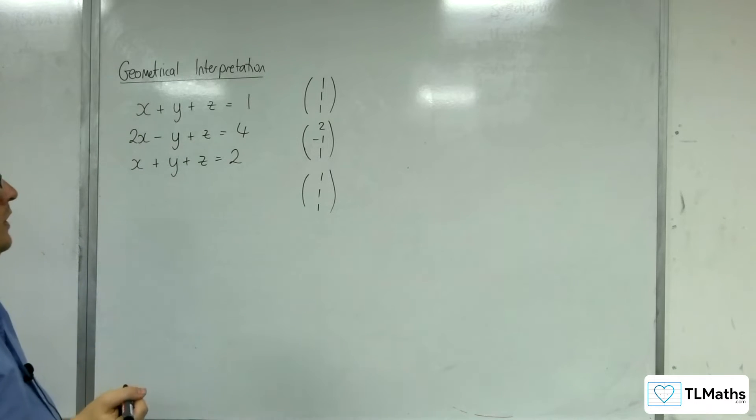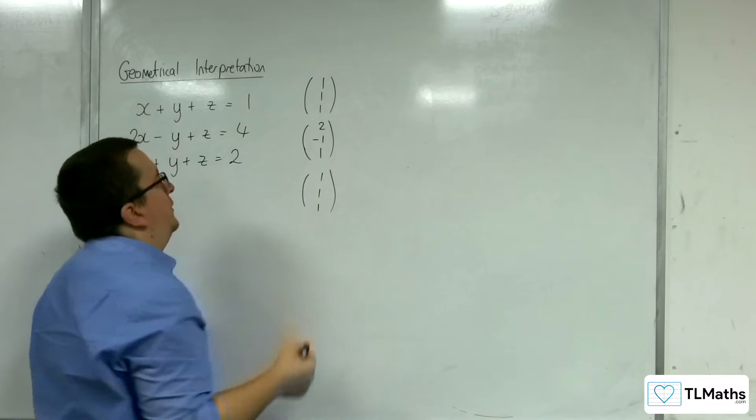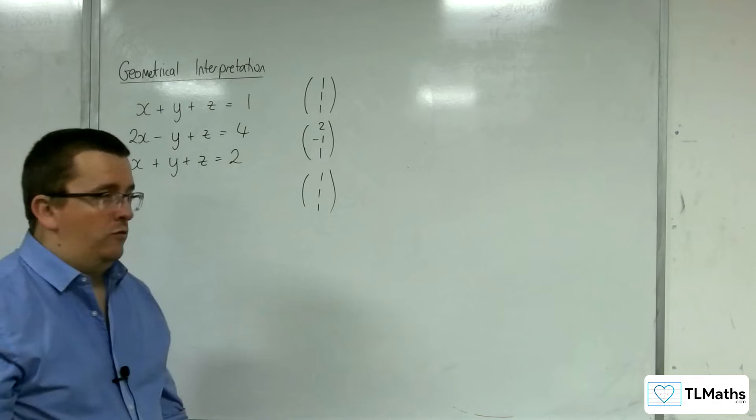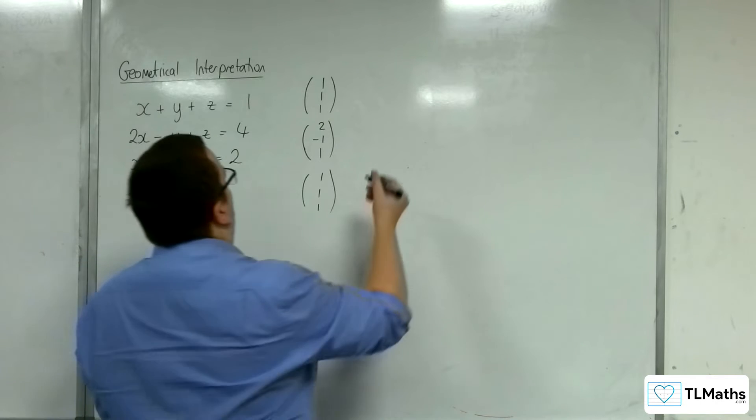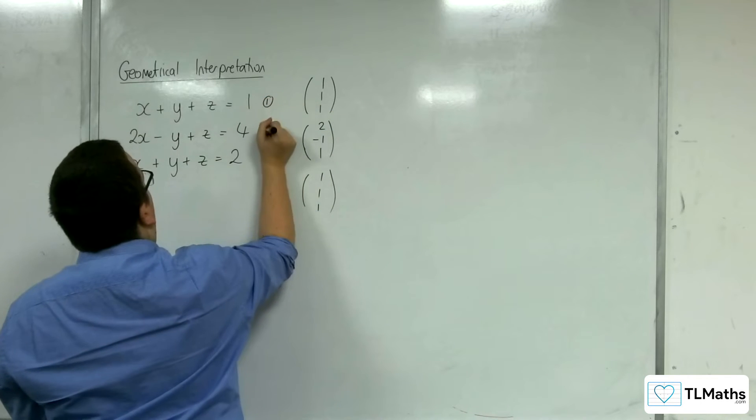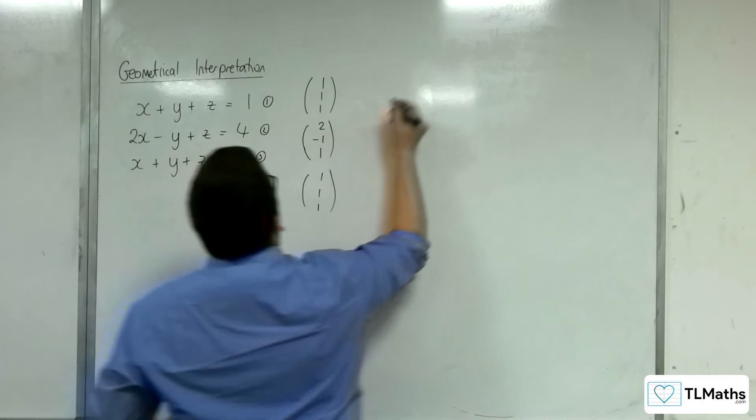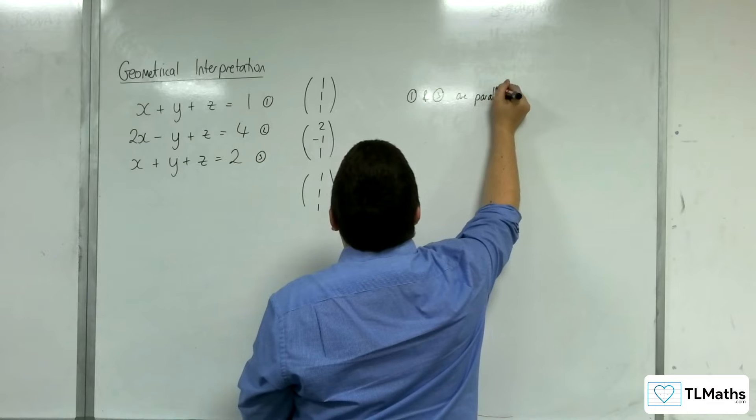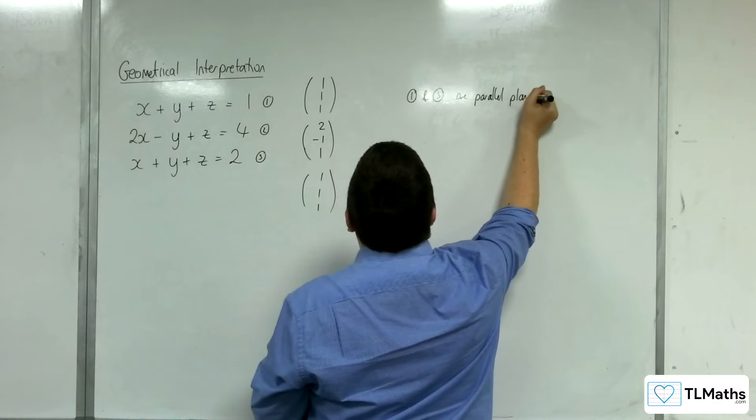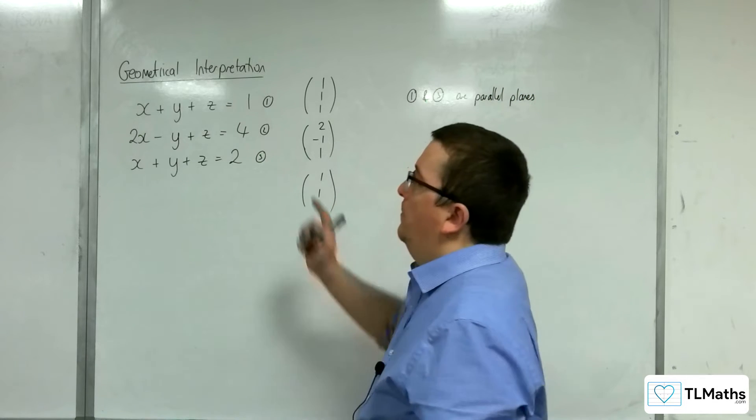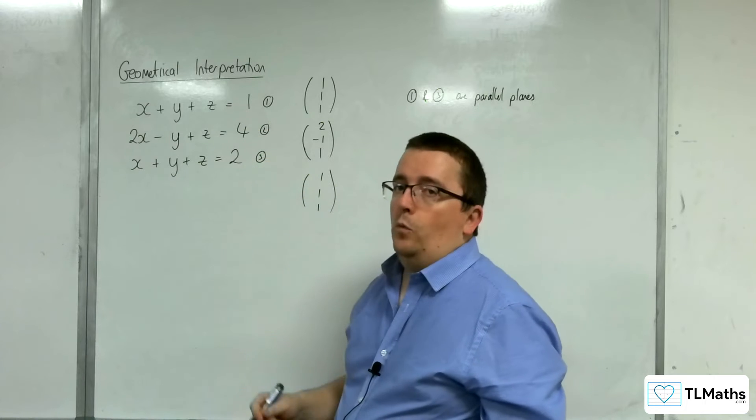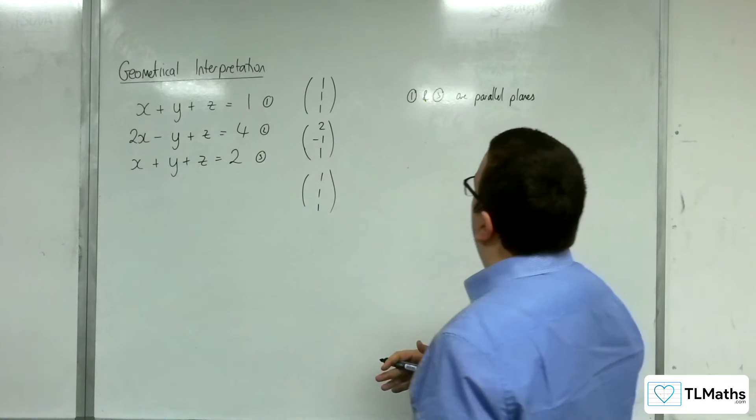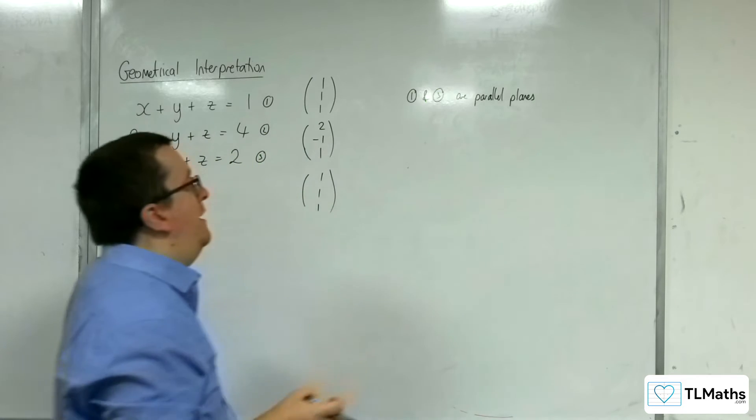Okay, so you can see clearly, because these normal vectors are the same for the first and third one, that we have two parallel planes. So if I number them, 1 and 3 are parallel planes. They're not the same plane, because they've got a different value on the end, the 1 and the 2. So they're lying one on top of the other. So we've got two parallel planes.